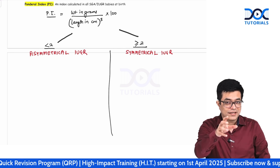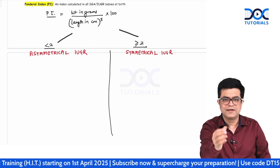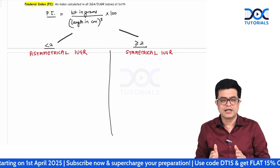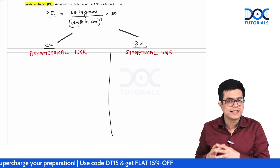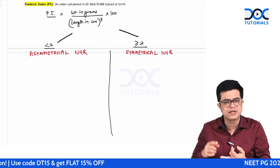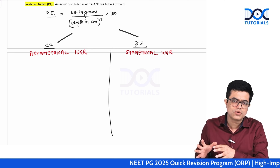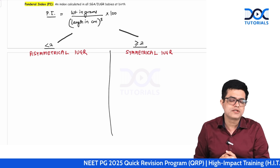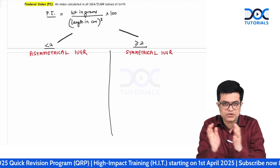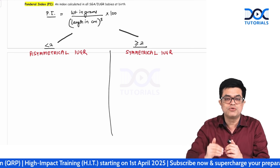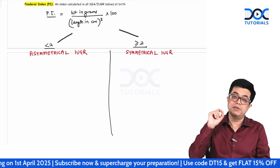Asymmetrical IUGR occurs due to adaptation in utero from maternal factors. Symmetrical IUGR, on the other hand, occurs in fetal diseases such as congenital infections or trisomies. The fetus cannot redistribute blood flow, so the brain is also affected — both the head and body are small and symmetrical. These babies have a relatively poor outcome and intellectual dysfunction is more common.